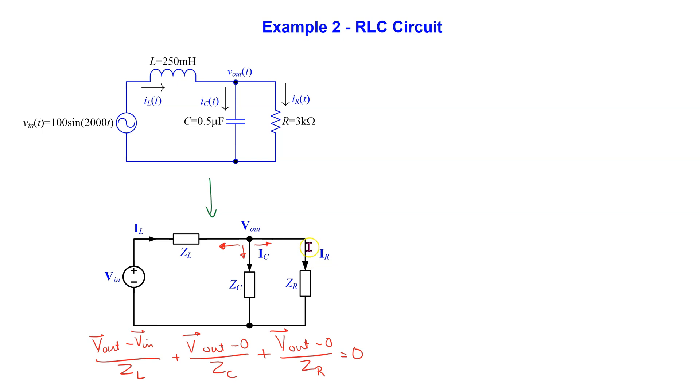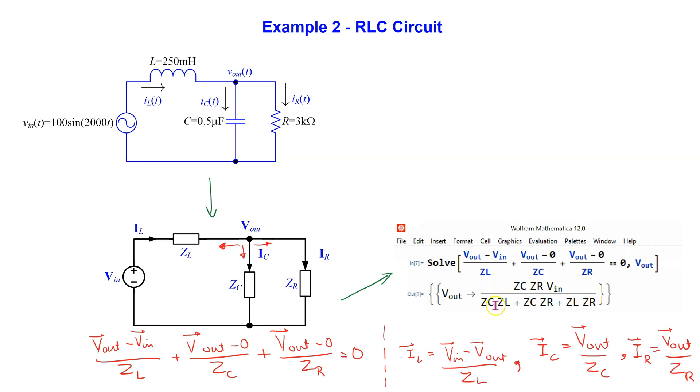We use node voltage method to write the circuit equation. We use Mathematica to solve the circuit equation and obtain the general expression for the output voltage. Once Vout phasor is found, we can then solve for the given currents of interest by applying Ohm's law to the impedances.